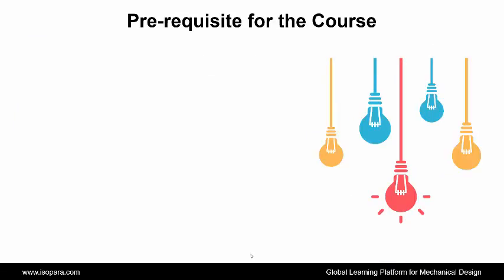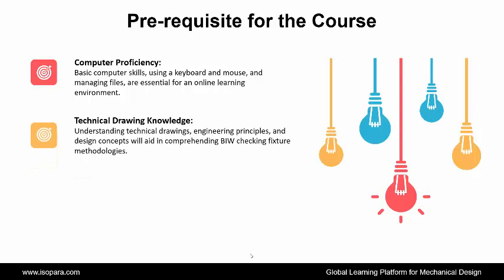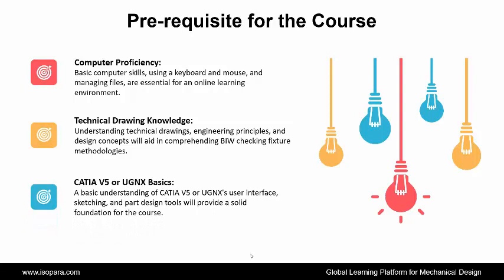Now, we see what the prerequisites required for this course are. First is Computer Proficiency — basic computer skills, using a keyboard and mouse, and managing files, are essential for an online learning environment. Second is Technical Drawing Knowledge — understanding technical drawings, engineering principles, and design concepts will aid in comprehending BIW checking fixture methodologies. Third is CATIA or UGNX Basics — a basic understanding of CATIA or UGNX user interface, sketching, and part design tools will provide a solid foundation for the course.